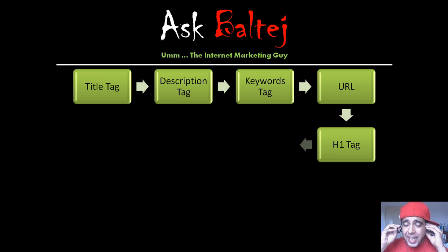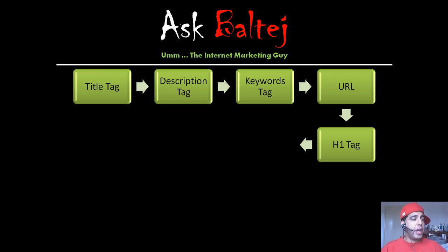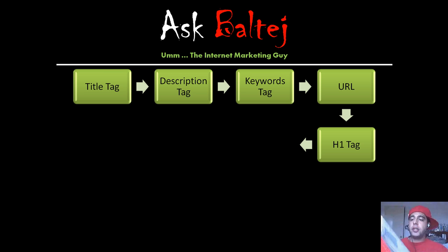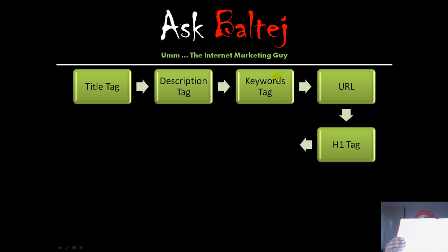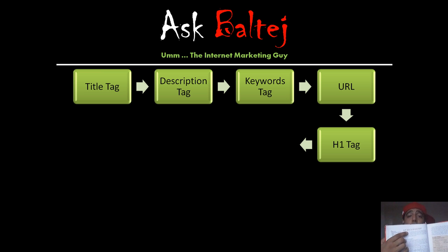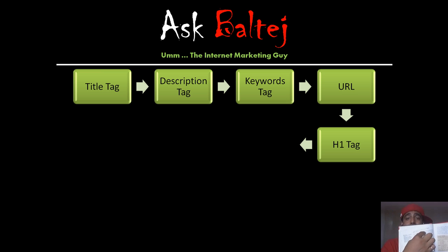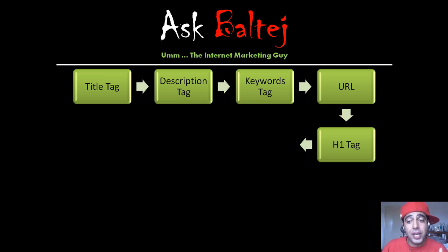The next factor search engines look at is an H1 tag, also called a header tag. This describes what that page is about — it's kind of like the title of the article. Going back to this book: 'What is acceleration?' — this is actually the title of this article, and that would be your H1 header tag, which describes what that page is about. So it's important that your keyword phrase is also in there.